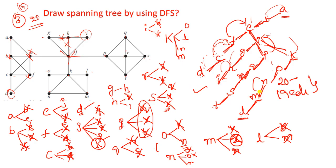Is this a spanning tree? Yes, our tree is correct. Like this you can draw any spanning tree. The structure will be changed depending on choices made, but we can construct any number of spanning trees for a particular graph. The most important point is the graph should be a connected one. So I hope you understand this session on DFS totally.